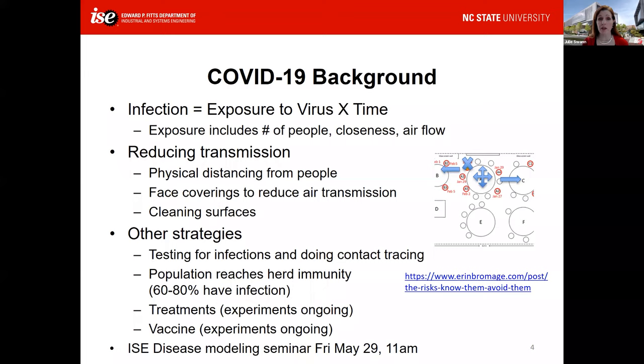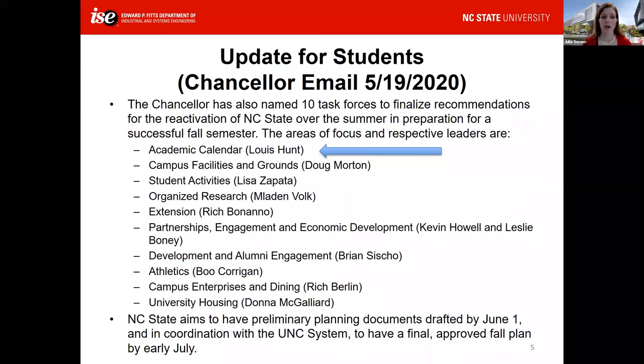A population could reach herd immunity for this virus; it's thought it will require at least 60% of the population to have immunity. We're not close to that yet in the United States, but over time it's possible we would approach that. New treatments regularly roll out, and new experiments are ongoing with vaccines. We gave a disease modeling seminar earlier today, and that will be available online if you're interested.